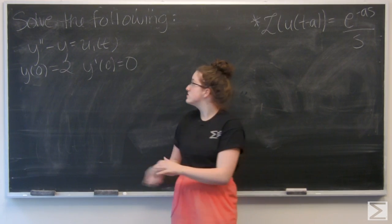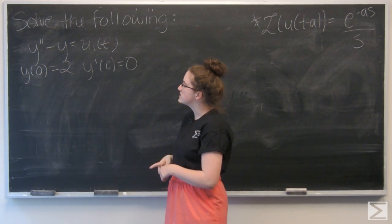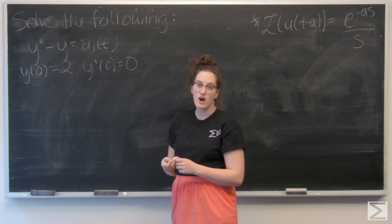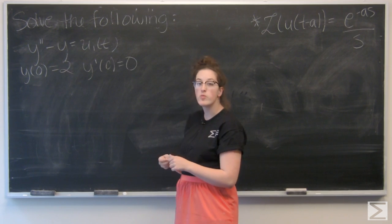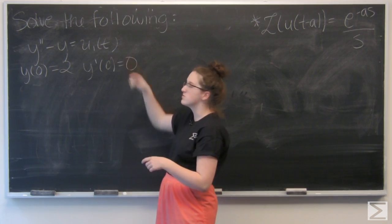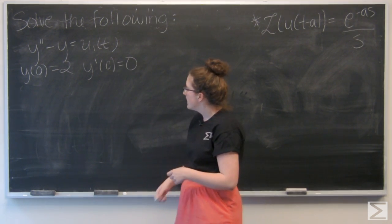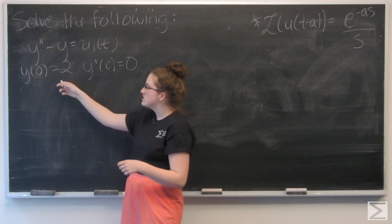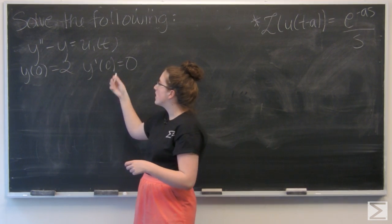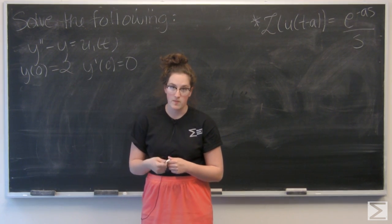This question asks us to solve the following second-order equation. I have y double prime minus y equals u sub 1 of t — the step function at t equals 1 — and I'm given initial conditions y of 0 equals 2 and y prime of 0 equals 0.